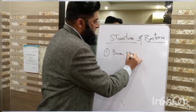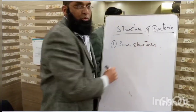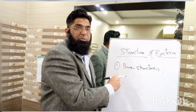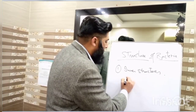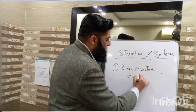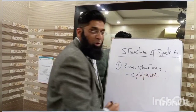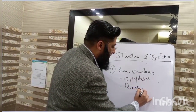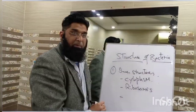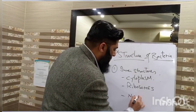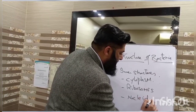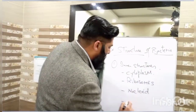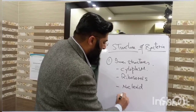Number one component of bacterial structure: inner structures. Inner structures mainly include: number one, cytoplasm; number two, ribosomes; number three, nucleoid; number four, plasmids.